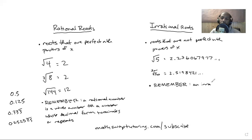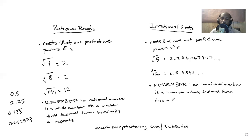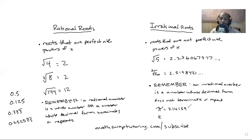For irrational numbers — just talking about numbers in general, not roots — an irrational number is a number whose decimal form does not terminate or repeat. That's why pi and the constant e are both irrational: they just go on and on. For example, e is 2.71828... and those just go on and on. They're not whole numbers, they don't repeat like a rational number would, and they don't terminate like a rational decimal would.